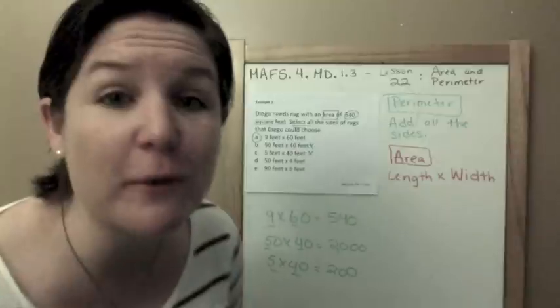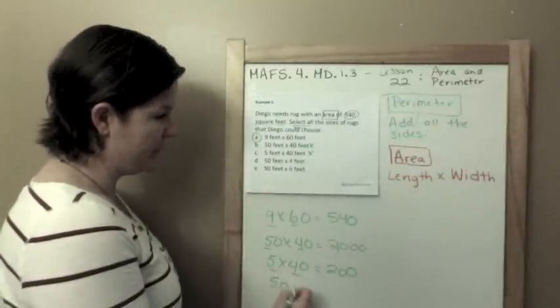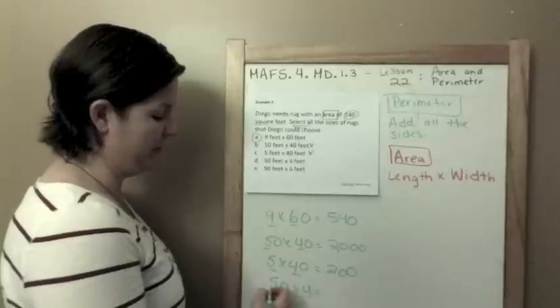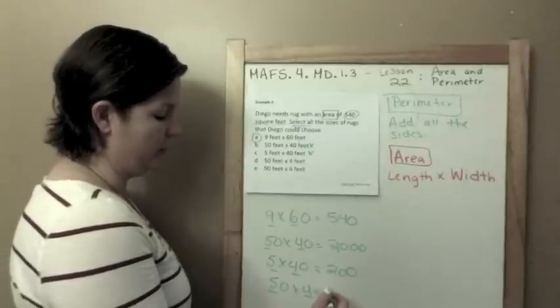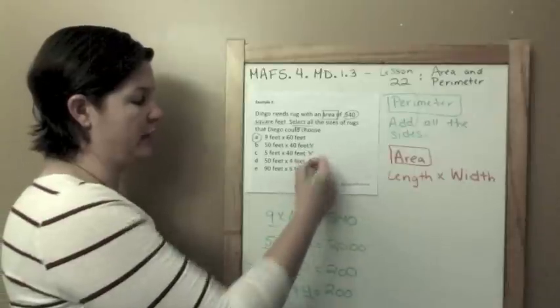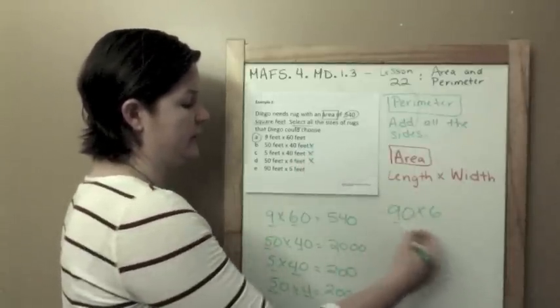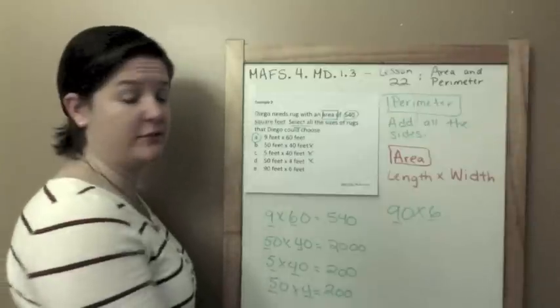Which is not 540 feet, last time I checked. 50 times 4 would be 5 times 4, which is 20, and zero, boom, 200 feet, no.